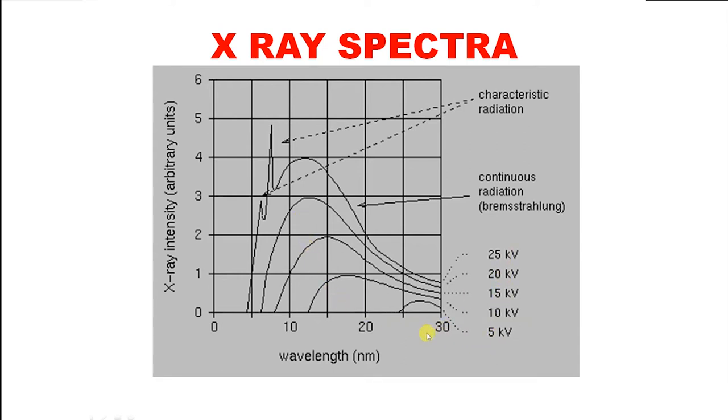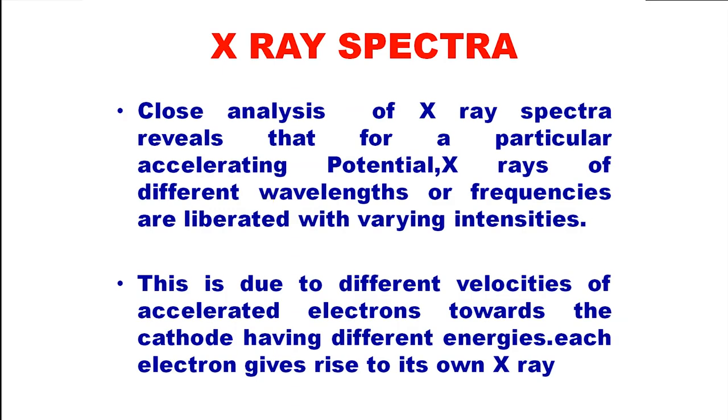You see that as the accelerating potential is increased, nature of the graph becomes different and finally, at a particular value some different peaks are observed. Now let us analyze these different graphs - analysis of x-ray spectrum.